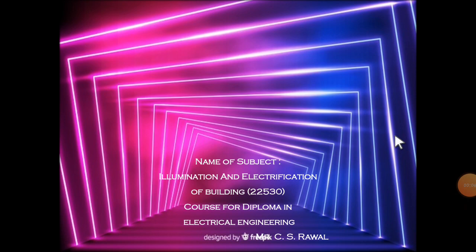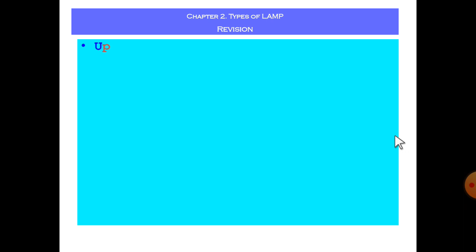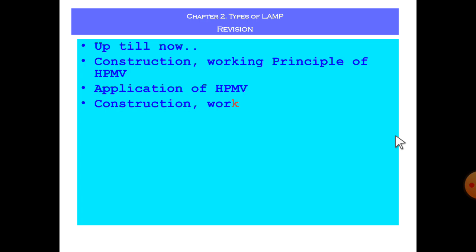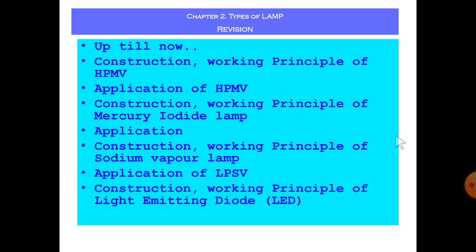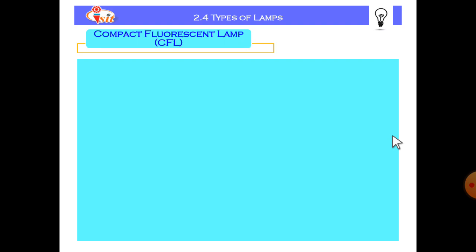Good morning students, welcome you all to the illumination and electrification of building video lecture session. Up till now we have seen construction and working principle of high pressure mercury vapor lamp and its application, mercury iodide lamp and its application, sodium vapor lamp and its application, and light emitting diode and its application.